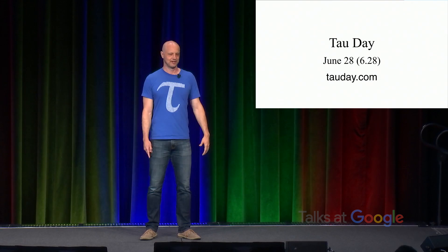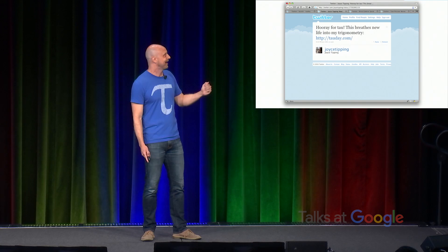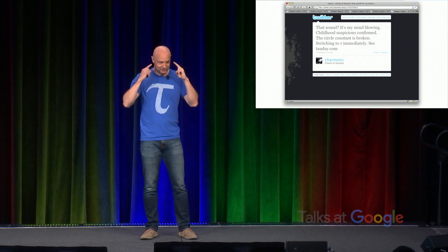And it immediately struck a chord. So I took some screenshots that day. Someone tweeted out, hooray for Tau, this breathes new life into my trigonometry. That sound, it's my mind blowing. Childhood suspicions confirmed. The circle constant is broken, switching to Tau immediately.